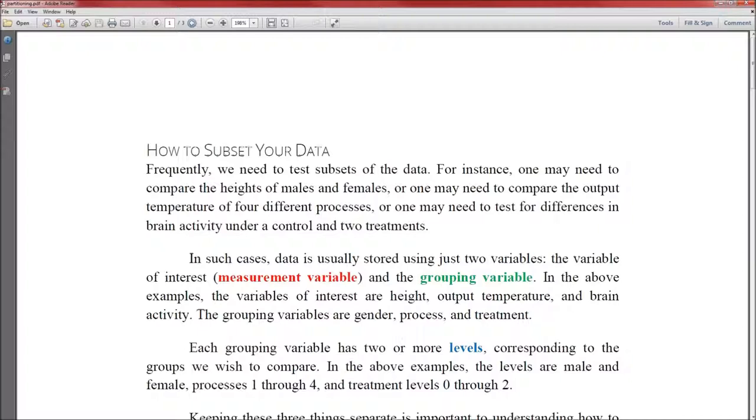In such cases, the data is usually stored using just two variables: the variable of interest, the measurement variable, and the grouping variable. That grouping variable is the variable that states which of the groups that record or that subject belongs to.